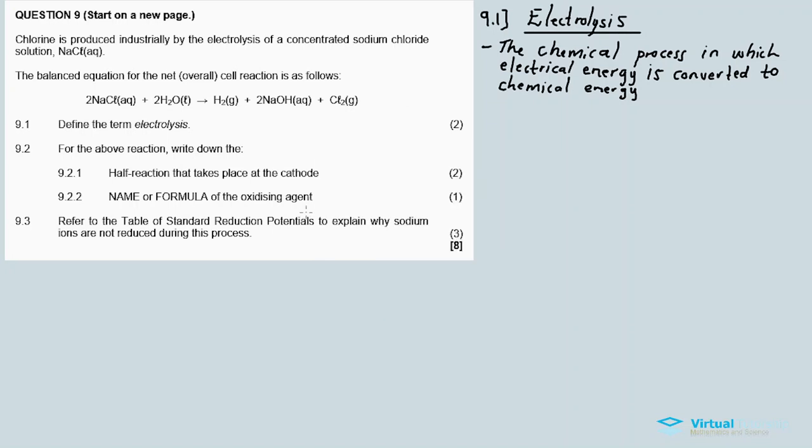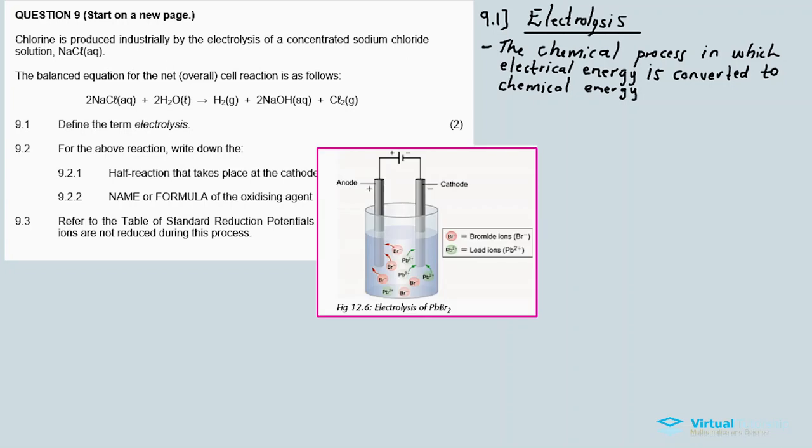That's the definition for electrolysis. 9.2, for the above reaction, write down the half reaction that takes place at the cathode. Okay. Cathode, anode. Right. And then anode. This is an example of an electrolytic cell.